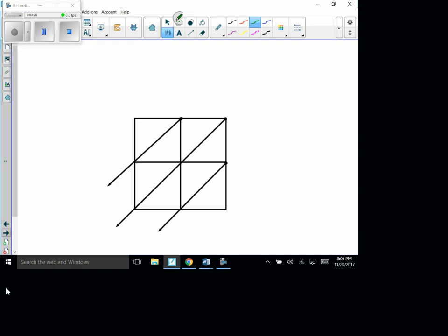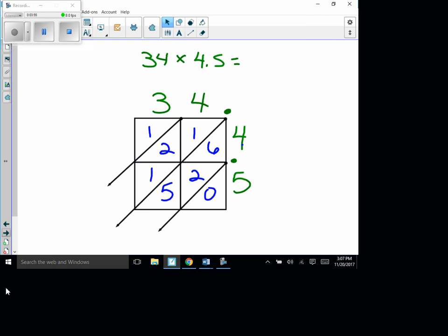Okay, first example is 34 times 4.5. So as you remember 34 with the 3 and the 4 and we need our decimal point and then 4.5. So multiply just straight through just like you normally would. 4 times 4 is 16, 4 times 3 is 12, 4 times 5 is 20, and 5 times 3 is 15. Okay, all that's fine, keep going, work it out just like you normally would. So adding diagonal you have 0 and 6 plus 2 is 8 plus 5 is 13, put down the 3 carry the 1. 1 plus 1 is 2 plus 2 is 4 plus 1 is 5 and then 1.